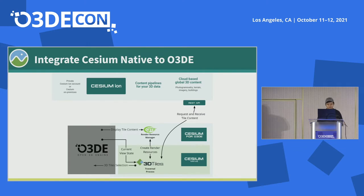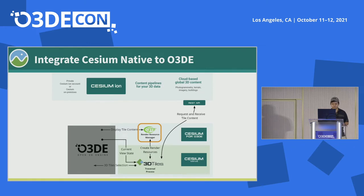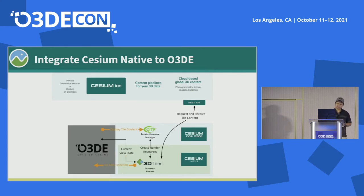After the GLTF importer is in place, we integrate Cesium Native into O3DE. The Cesium Native library takes care of all the tile traversal and streaming process. On the engine side, it needs to do a couple of things: it needs to hook the GLTF importer to the Cesium Native library so the library can create render resources for tile content in both the worker thread and the main thread. The engine also needs to send the current view states to the Cesium Native library for tile culling and selecting level of detail based on screen space error. After the streaming and traversal process, the library returns a list of GLTF models back to the engine so it can display them in the current frame.